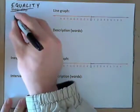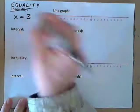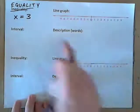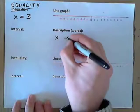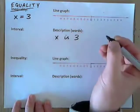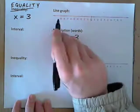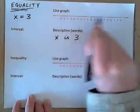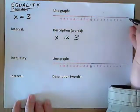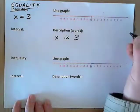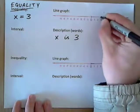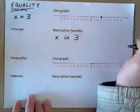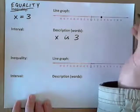So, something like this: x is equal to 3. How would we write this in words? x is 3. That makes sense. How would we graph that on a number line? Well, they just put a circle on 3. That's it. So, x is 3, and that's an equality.